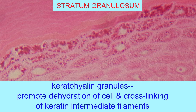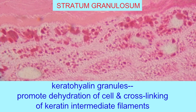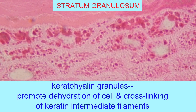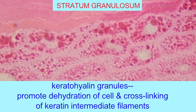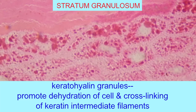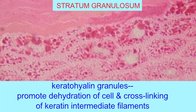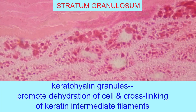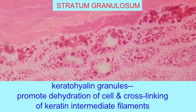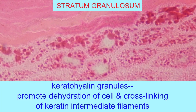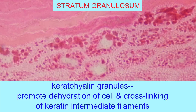As cells go through the stratum granulosum, one can observe two types of granules. The keratohyalin granules produce proteins which promote the dehydration of the cell and promote the cross-linking of the intermediate filaments of keratin inside the cytoplasm.